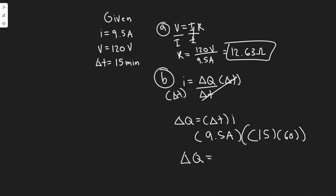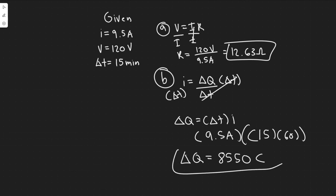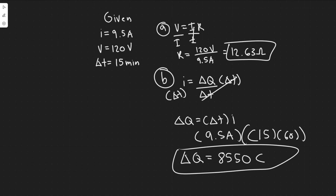So delta Q equals 8,550 Coulombs, since we're dealing with charge. That's the charge that passes through the hairdryer in 15 minutes. So 8,550 Coulombs is your answer for Part B, and 12.63 Ohms is the answer for Part A. Hopefully you found this useful.